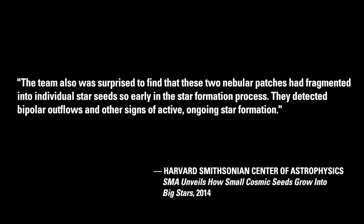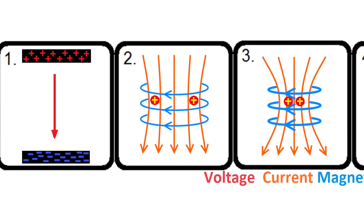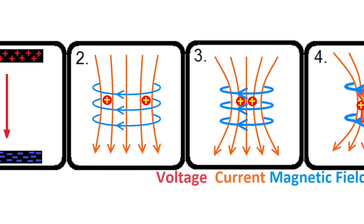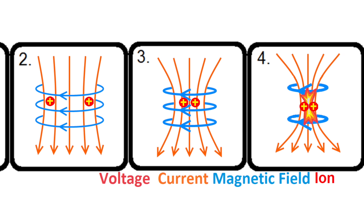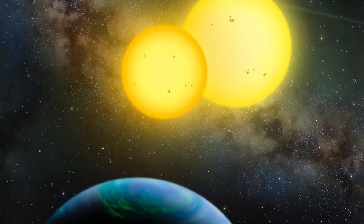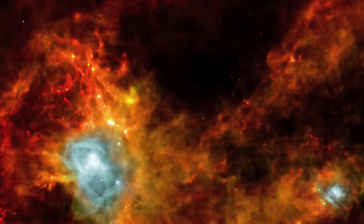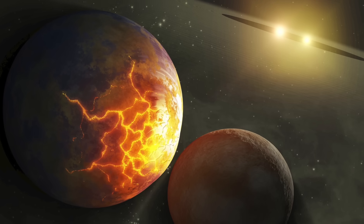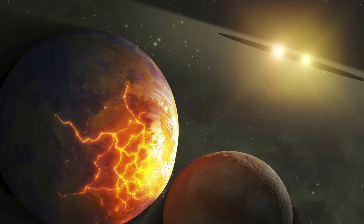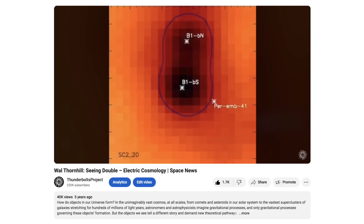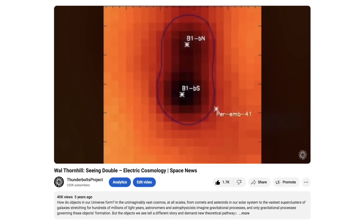The team was also surprised to find that these nebular patches had fragmented into individual star seeds so early in the star formation process. They detected bipolar outflows and other signs of active, ongoing star formation. Everything described only supports the electrical theory of star formation. The electromagnetic Z-pinch, overwhelmingly more powerful than gravity, works far more efficiently and rapidly than gravity at pulling in material to form a star or planet. The grouping and doubling of stars is a predictable effect in the electrical theory. Plasma cosmology predicted that stars would form along filaments like beads on a string. The surprising number of binary stars observed in the Milky Way becomes predictable when we consider the experimentally verified doubling effect characteristic of electrical discharge. I recommend viewers visit Wal Thornhill's classic Space News, Seeing Double.